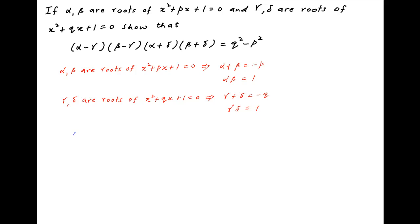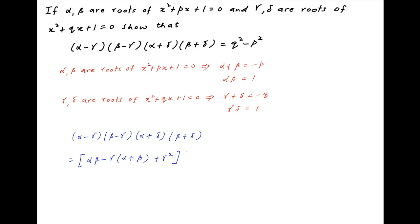Now, we are given the expression (alpha minus gamma)(beta minus gamma)(alpha plus delta)(beta plus delta). Combining the first two terms and combining the last two terms, we get (alpha·beta minus gamma(alpha + beta) + gamma²) multiplied by (alpha·beta + delta(alpha + beta) + delta²).